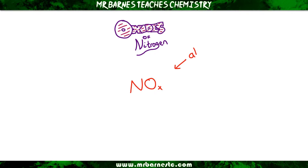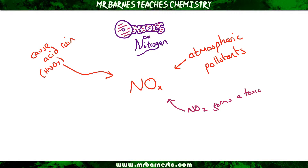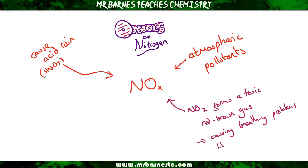The problem with forming these nitrous oxides is they are atmospheric pollutants, so they go up into the atmosphere and they pollute it. They can also cause acid rain — they react with the rain water to make nitric acid. NO2, nitrogen dioxide, can also form a toxic reddish-brown gas. When inhaled, that causes breathing problems such as bronchitis, which is obviously really bad for health.